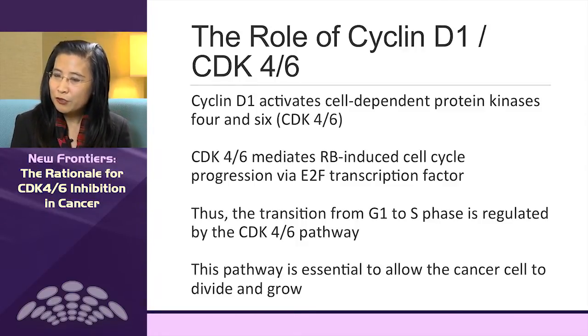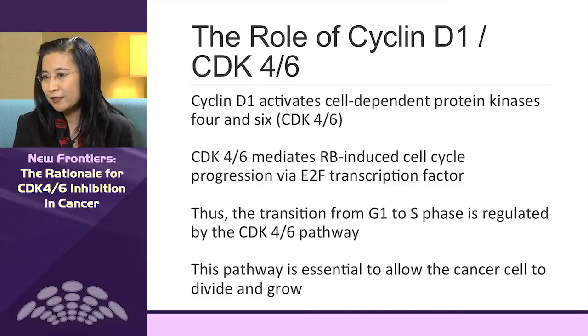Before cells commit to the DNA synthesis phase, it has to be controlled by CDK4 and 6. Normally this cycle is very well controlled, but in cancer cells it's highly deregulated. CDK4-6 phosphorylates a downstream target called retinoblastoma protein, RB. When RB is phosphorylated, it releases the transcription factor E2F, causing activation of genes important for cell proliferation and committing cells to the DNA synthesis phase.